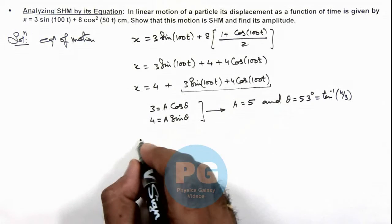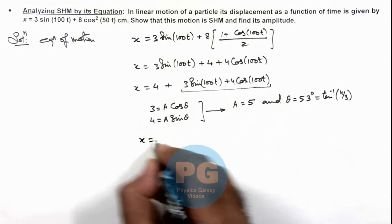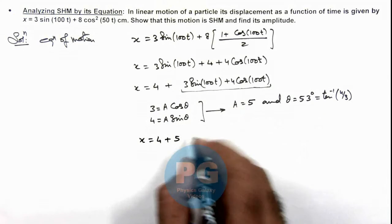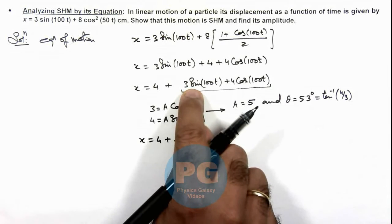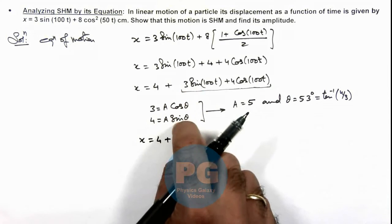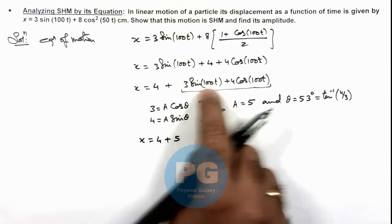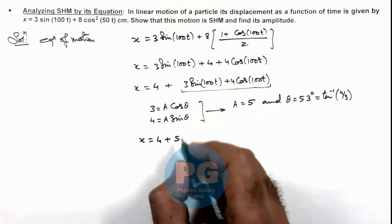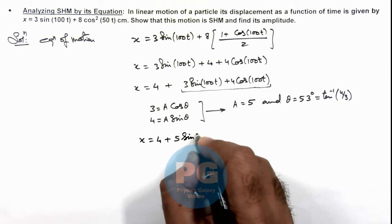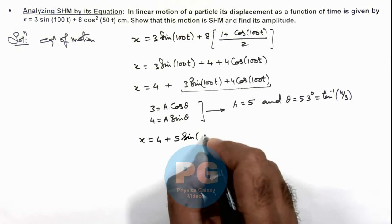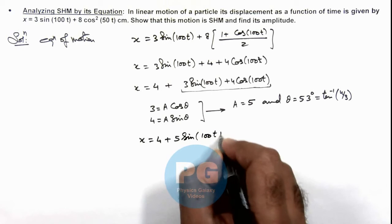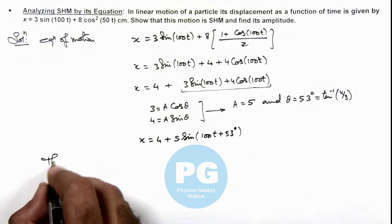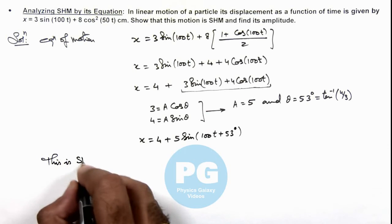Now this equation can be rewritten as 4 plus 5 times — where A cos theta gives sine 100t and A sine theta gives cos 100t — so this becomes 5 sine of 100t plus 53 degrees. So this is the SHM equation.